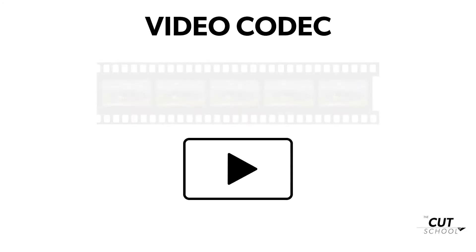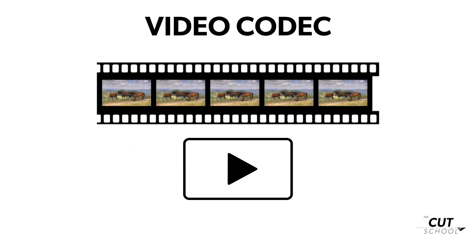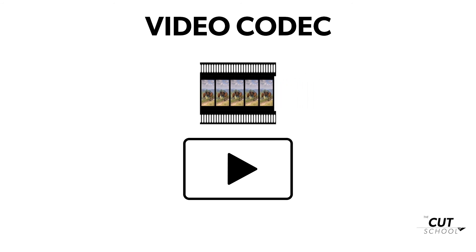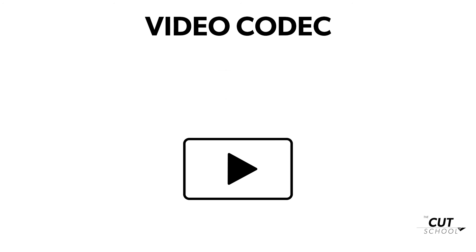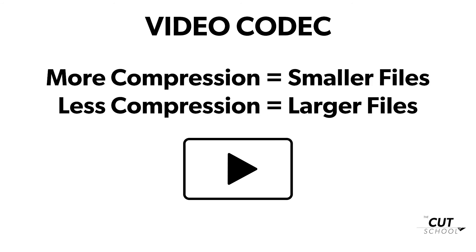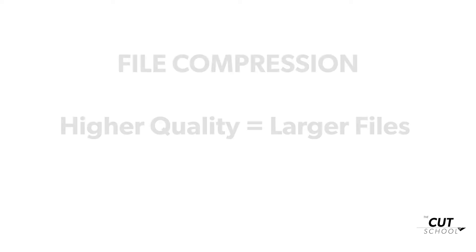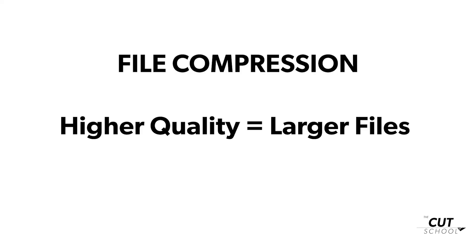The video codec is the type of compression used to fit all of the data inside the file format. Some video codecs are highly compressed, resulting in very small file sizes. Some codecs are uncompressed, resulting in very large file sizes. Generally speaking, when you're dealing with compression, higher quality equals larger file sizes.